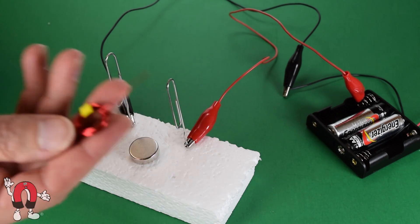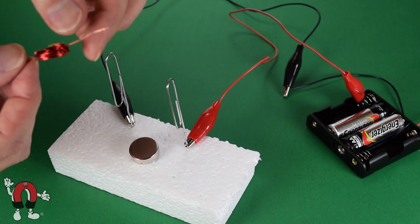This is the rotor. It's a coil of wire, about 15 turns in there.